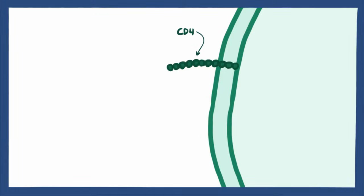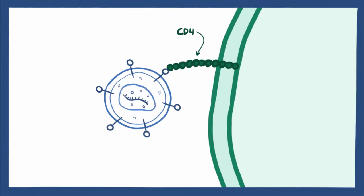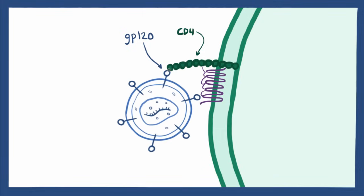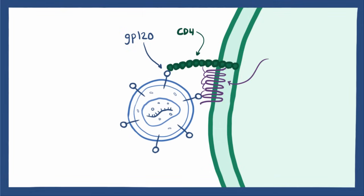HIV targets and attaches to the CD4 molecule via a protein called GP120, found on its envelope. HIV then again uses GP120 to attach to another receptor called a coreceptor. HIV needs to bind to both the CD4 molecule and the coreceptor to get inside the cell.